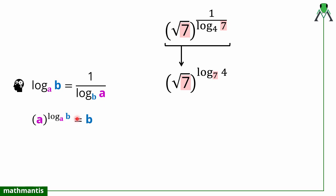The basic idea to apply this property is: for a base raised to a logarithm, the logarithmic base must be the same as the outer base. If both values are the same, we can remove the logarithmic part and write the result as just b. Since the outer base is 7, I needed to create a logarithmic term in the exponent whose base is also 7 — and that is done by taking the reciprocal using the first property.